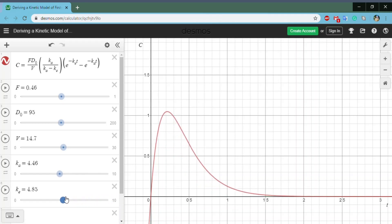And on the left, if we decrease KE, you can see that we are decreasing the elimination rate, and we're making that concentration go way, way up.